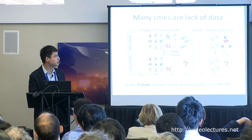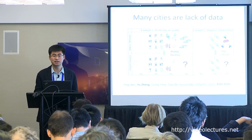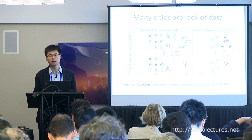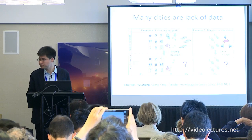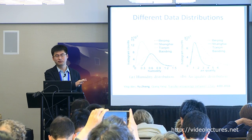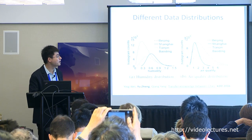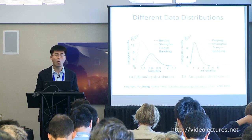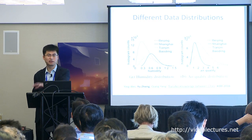This is published this year under 'Transfer Knowledge Between Cities.' We believe it is very important to solve the data sparsity problem in new cities where infrastructure was just built and rich data is unavailable. As shown, Beijing, Shanghai, and other cities have very different distributions of air quality data — you cannot directly apply a model trained in Beijing to other cities.